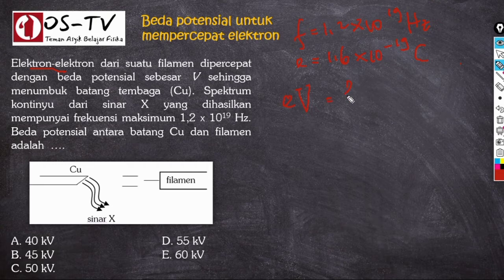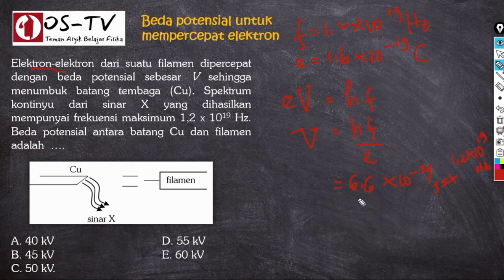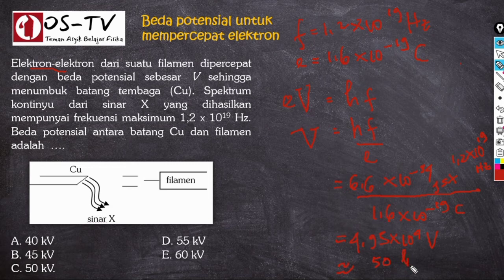Kita gunakan persamaan eV = hf, sehingga V = hf / e. Di sini h adalah konstanta Planck = 6,6 × 10⁻³⁴ J·s, dikali frekuensi 1,2 × 10¹⁹ Hz, dibagi e = 1,6 × 10⁻¹⁹ coulomb. Kalau perhitungan ini diselesaikan, diperoleh nilai kurang lebih 4,95 × 10⁴ volt, yang mendekati 50 kV. Jawaban dari soal ini adalah C.